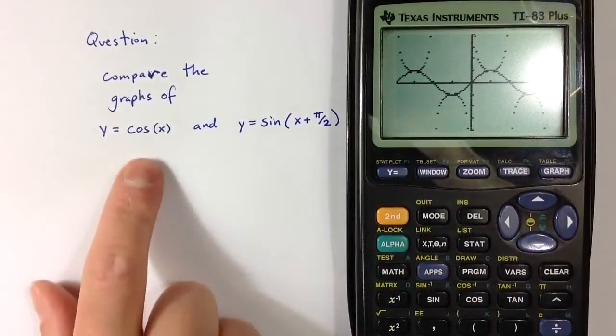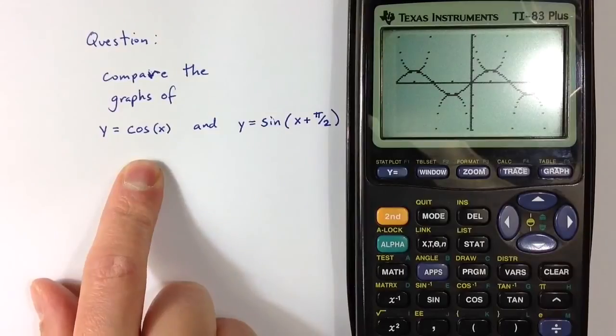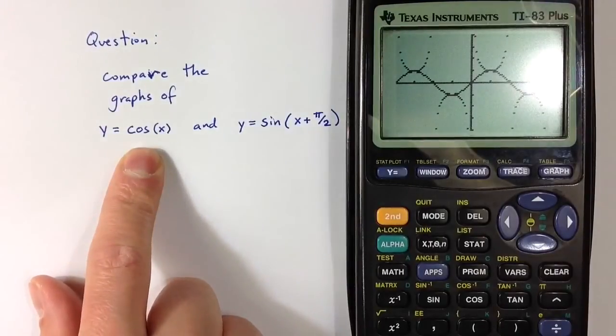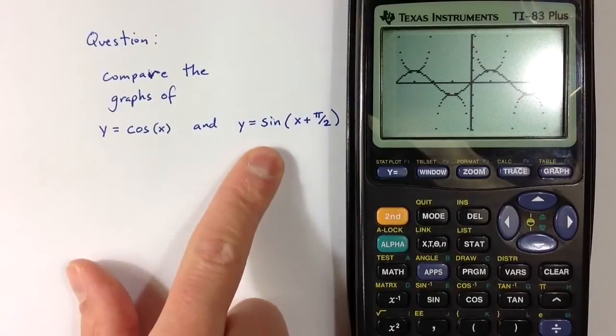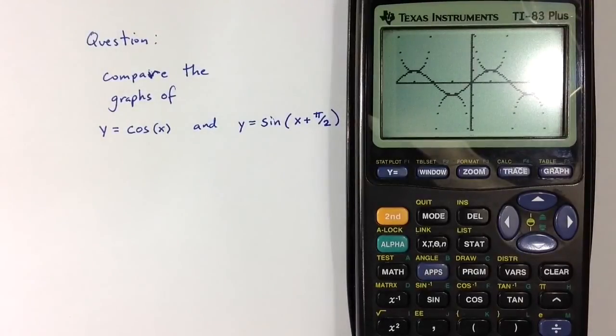So let me end with a question. I encourage you to take a few minutes. Try to use your graphing calculator to compare the graphs of cosine of x, y equals cosine of x, and y equals sine of x plus pi over 2. I hope you enjoyed the video. Thanks for watching.